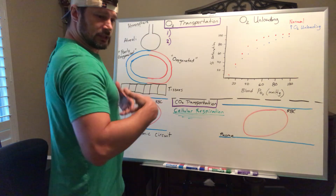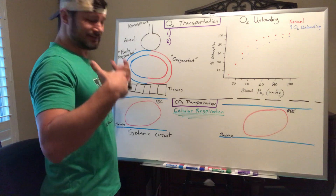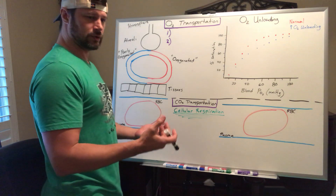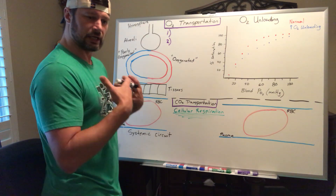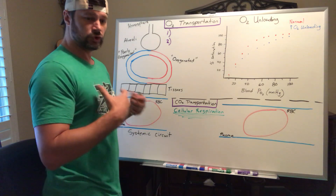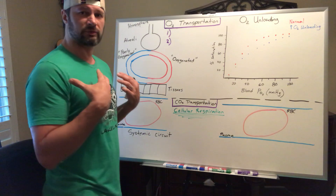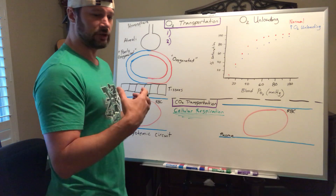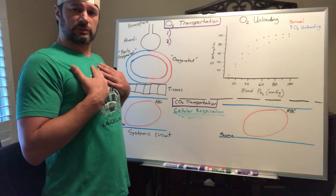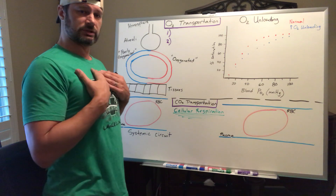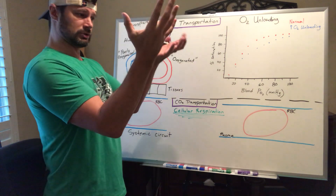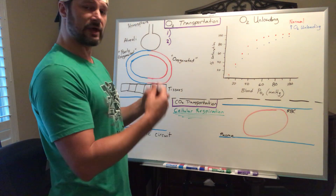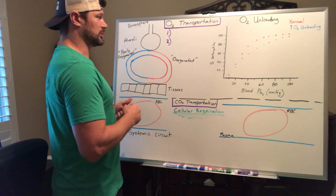Take a nice deep breath in — ventilation — take a nice deep breath out — ventilation. We have inhalation and exhalation, and what we're doing there is changing the volume of our thoracic cavity, therefore changing the volume of our lungs. Since pressure is inversely related to volume, as you breathe in the thoracic volume gets bigger, we decrease the pressures in our lungs, and air moves from an area of high to low — from the atmosphere into our lungs. The opposite happens when we breathe out.